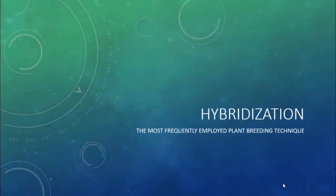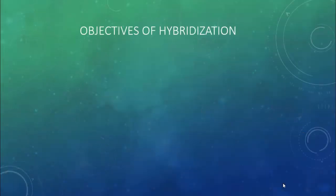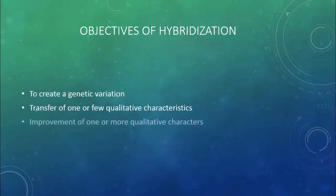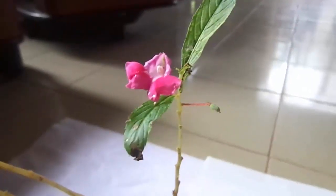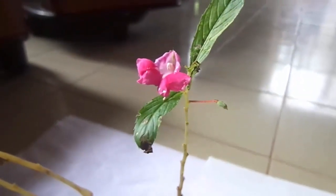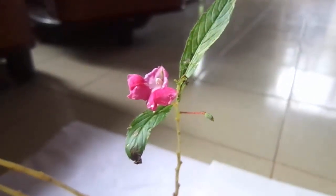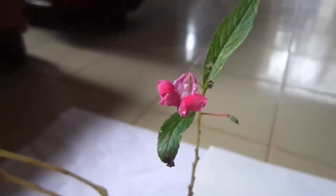Hybridization is the most frequently employed plant breeding technique. The objectives of hybridization are to create genetic variation, transfer one or few qualitative characteristics, and improve one or more qualitative characters. This video is about homemade artificial pollination to produce a new variety of flower.